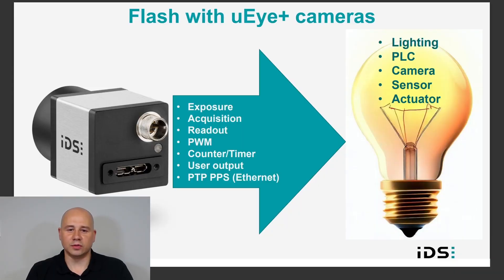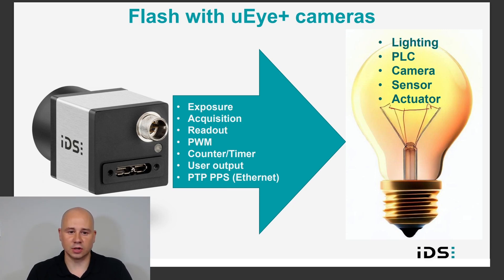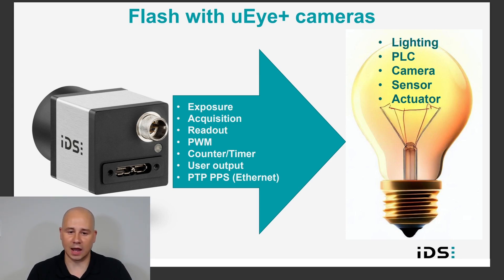The flash output signal is not limited to only activating lighting. It can be utilized to synchronize numerous types of external devices such as PLCs and other sensors. In addition to signaling the image exposure, flash output can also signal other internal camera events such as image acquisition and sensor readout or various other internal signals. In the following example, I will demonstrate how to set up a camera to activate a ring light with each image capture.